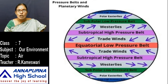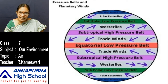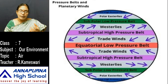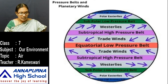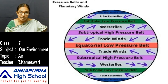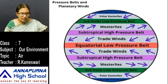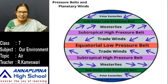Observe this picture carefully, children. The equatorial low pressure belt — here the temperature is too high, so pressure is very low and all winds come to this area. These are the trade winds. A wind is named after the direction from which it blows — for example, winds blowing from the east are called easterlies.